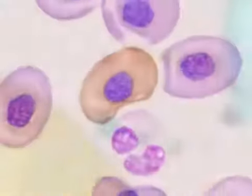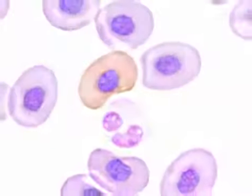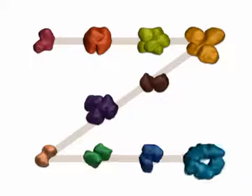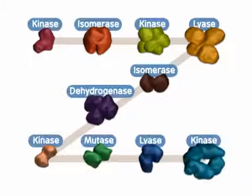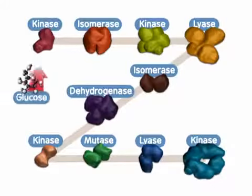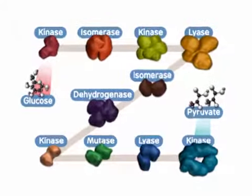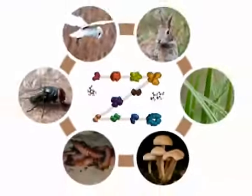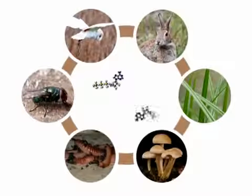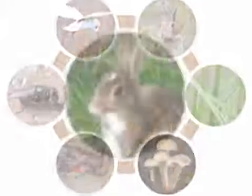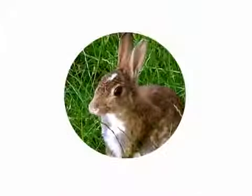As you can see, glycolysis is a process involving multiple enzymatic reactions that break down sugars. Its major contribution to biological organisms is the production of ATP, which is used to drive many other biochemical pathways.